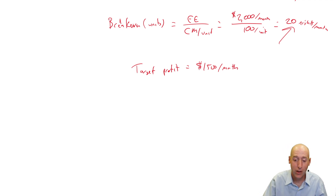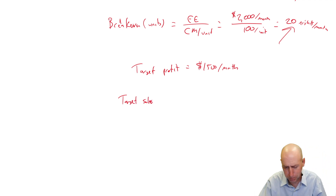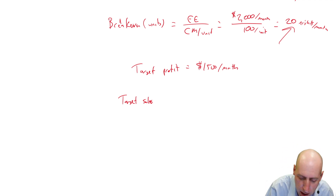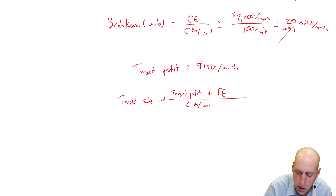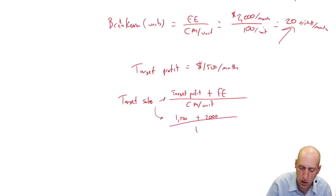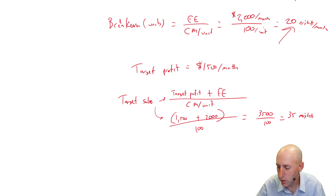To calculate break-even at the target profit — how many sales to make the target profit — we use: target profit plus fixed expenses, all divided by CM per unit. This is pre-tax, not considering income tax, just back of the napkin math. Our target profit was $1,500 plus fixed expenses of $2,000, all divided by $100. So $3,500 over $100 means to make her target profit, she needs to rent out her place for 35 nights per month.